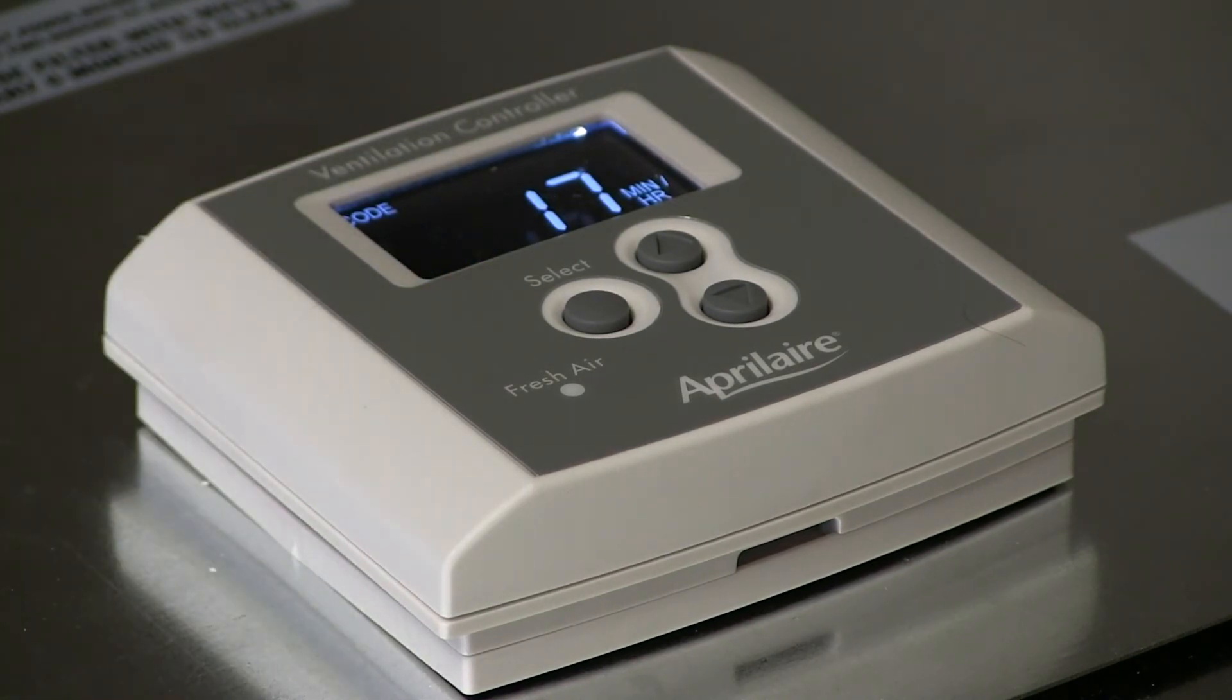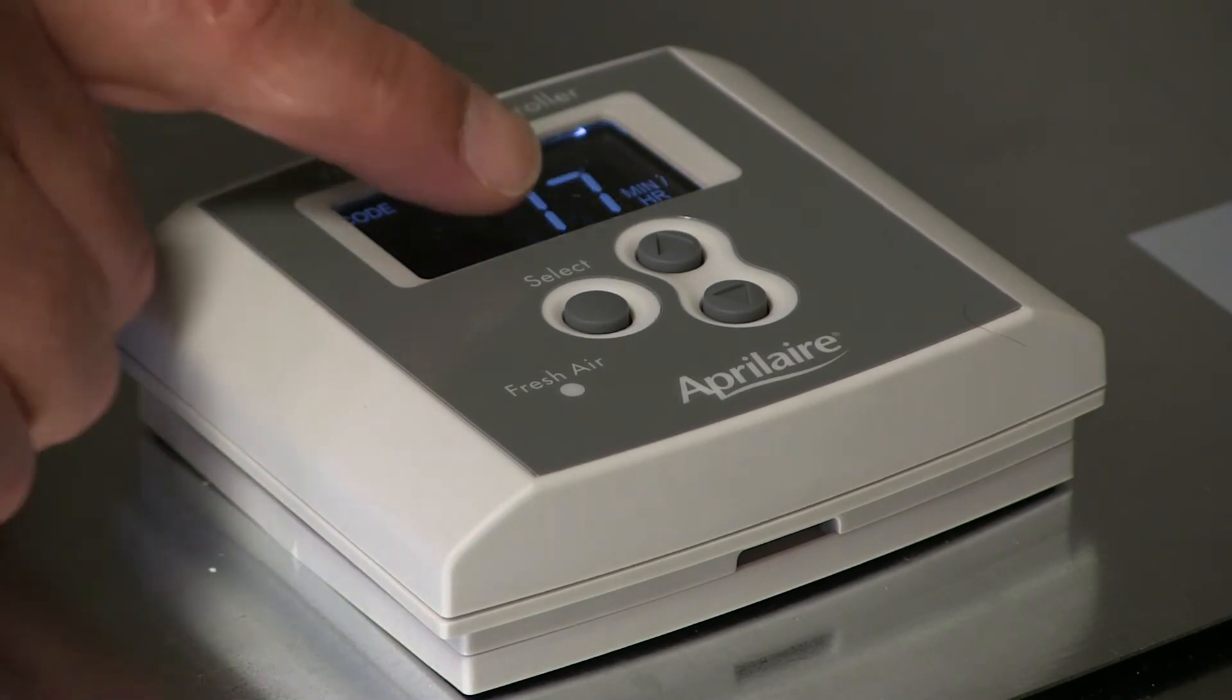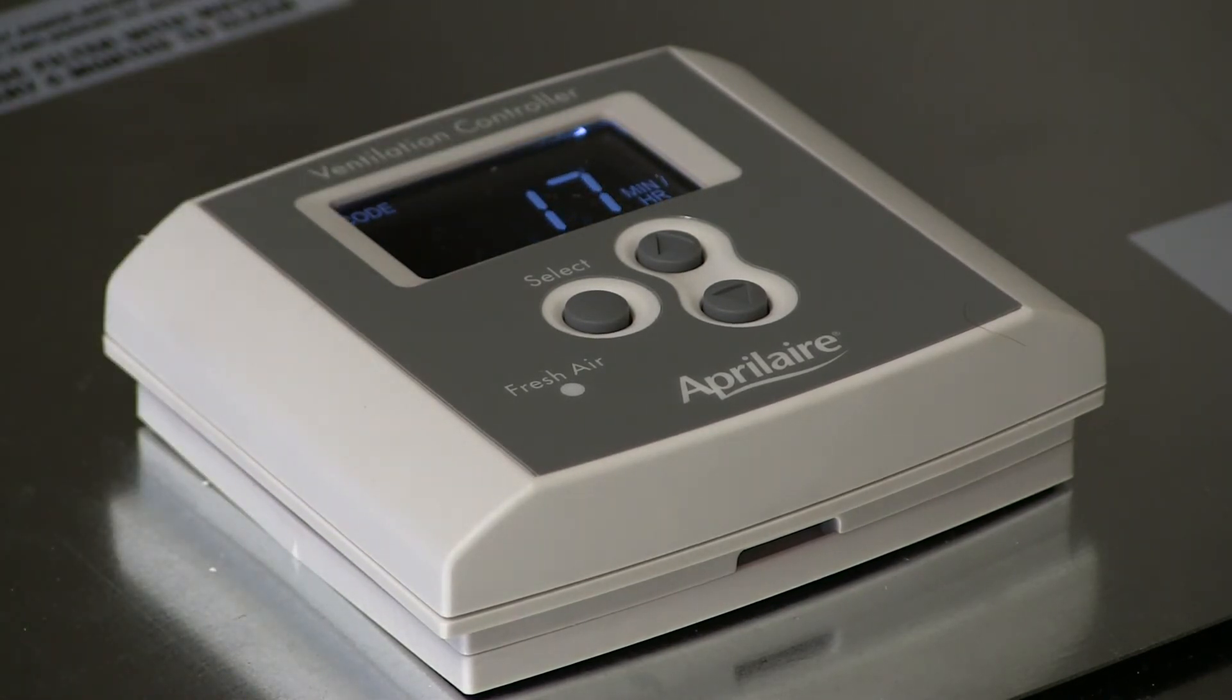So now this is what the display looks like when the control is set up, and it shows the amount of time per hour that this ventilation system is going to operate. And that's based on the amount of airflow that's required and the amount of airflow that the system is delivering.